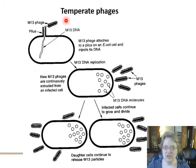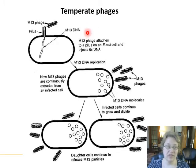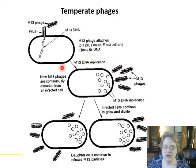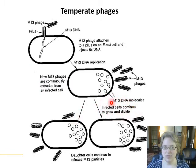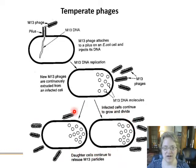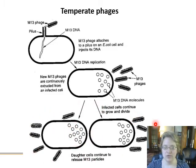There's another type of phage called a temperate phage — one where it doesn't explode the cell or kill the cell at the end. M13 is the flagship phage here. It goes in, does DNA replication, makes phages, and the phages are extruded from the cell. The cell doesn't explode and die — it's infected with M13 and continues to grow and divide. You have a population of cells with an active virus living within them, producing the virus while also undergoing regular cell growth and DNA replication, and they're also shedding viruses.